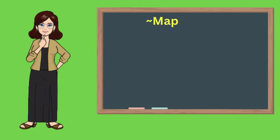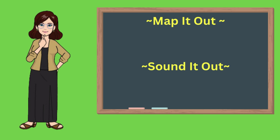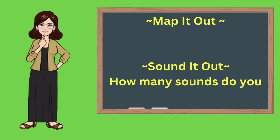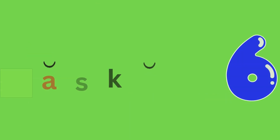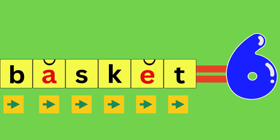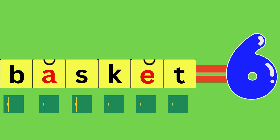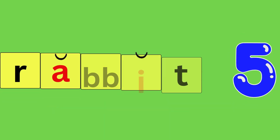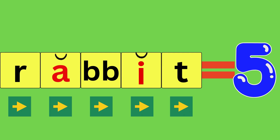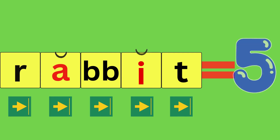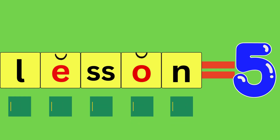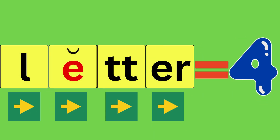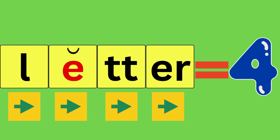Now we will map each word out and identify how many sounds each word has. Get ready and map it out and sound it out with me, and be sure to say how many sounds you hear in each word. Basket, B-A-S-K-E-T, basket — how many sounds did you hear? Six. Rabbit, R-A-B-I-T, rabbit — how many sounds did you hear? Five. Lesson, L-E-S-U-N, lesson — how many sounds did you hear? Five. Letter, L-E-T-R, letter — how many sounds did you hear? Four.